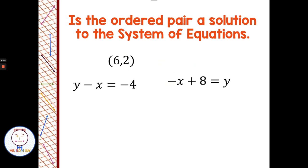We're given the ordered pair (6, 2) and two equations. With an ordered pair, the x-value comes first, so x = 6 and y = 2. We substitute into the first equation, y − x = −4: replace x with 6 and y with 2, giving us 2 − 6 = −4. Two minus six is negative four, so −4 = −4. The ordered pair (6, 2) works in the first equation.